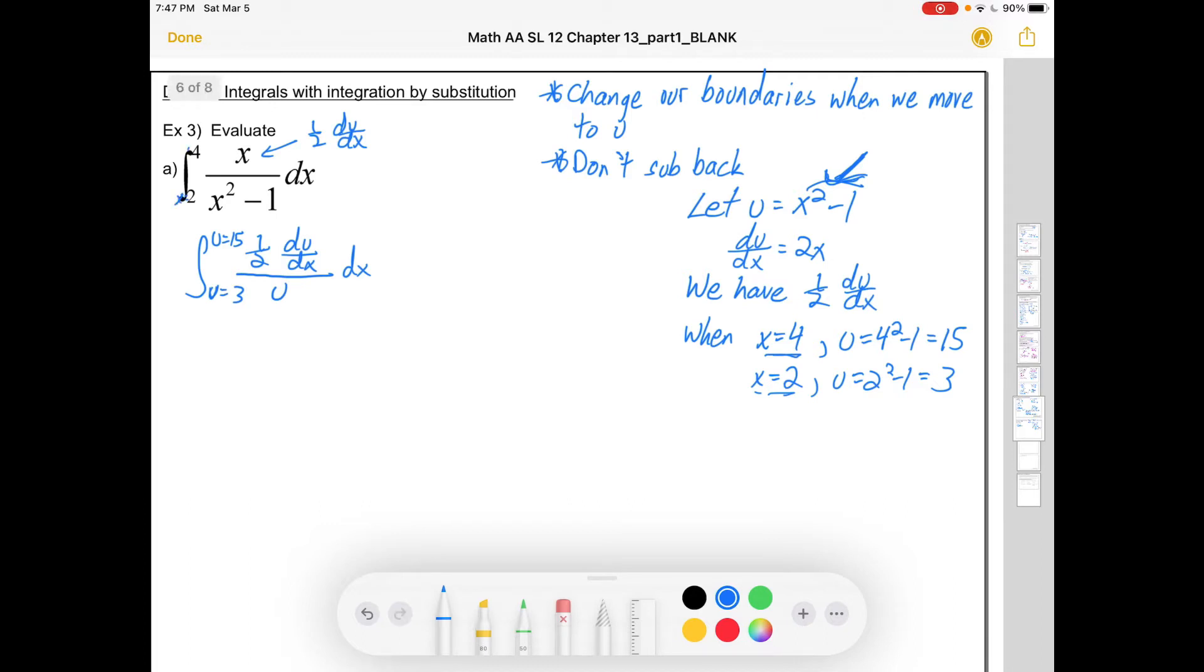If you wanted to you could even write that these are x values. Of course it's implied by the variable you're working in but the instant you start working in multiple variables or making a substitution things might get a little bit dicey. Okay here's everything written out a little more plainly. And so I'm going to keep going here. U equals 3 to u equals 15 of 1 half times 1 over u times du.